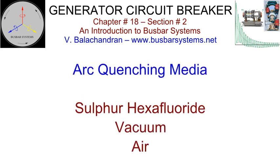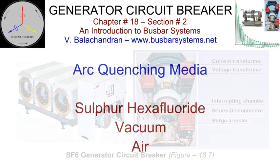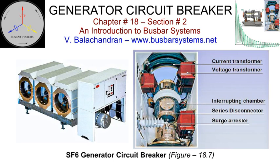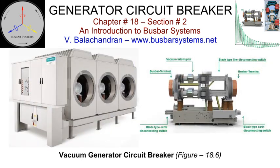Sulfur hexafluoride, vacuum, and air blast have been used as arc quenching media in generator circuit breakers. Generator circuit breakers with sulfur hexafluoride as the quenching media are most widely used. These have a continuous current rating of up to 25 kilo amperes under natural air cooling, and 50 kilo amperes under forced air cooling, up to a voltage rating of 36 kilo volts. This is almost in line with the isolated phase bus philosophy, where the isolated phase bus rated above 25 kilo amperes seems to be more economical and practical with forced cooling. Vacuum has been used as a quenching media for continuous ratings up to 15 kilo amperes, up to a rated voltage of 24 kilo volts. Vacuum interrupters are connected in parallel in each pole to achieve the specified rated current.